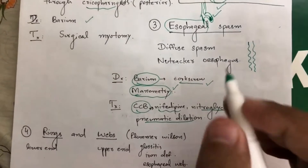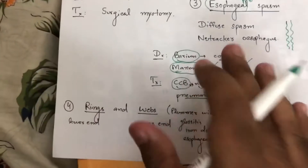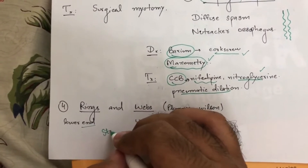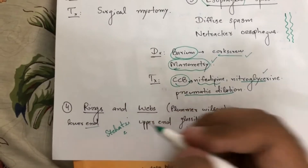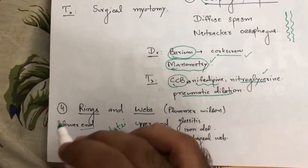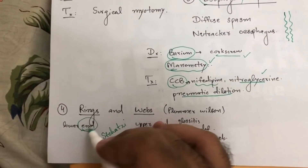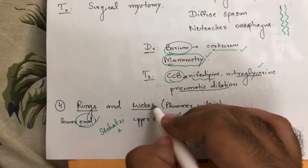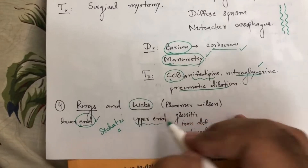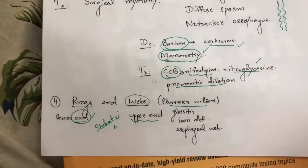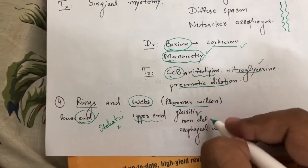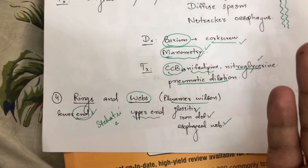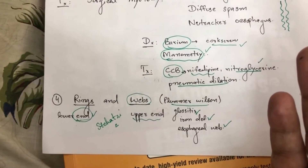Treatment for esophageal spasm includes calcium channel blockers — nifedipine — and nitroglycerine for relaxation. If not controlled, pneumatic dilation can be used. Moving on, rings and webs: there is Schatzki's ring, which is a ring or stricture at the lower end of the esophagus. Esophageal webs are associated with Plummer-Vinson syndrome (also known as Patterson-Kelly syndrome), which is a triad of glossitis, iron deficiency anemia, and esophageal web.